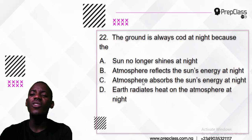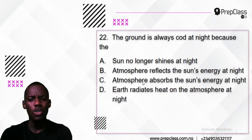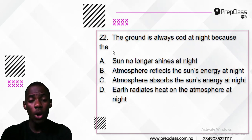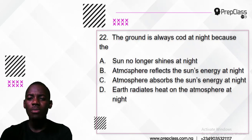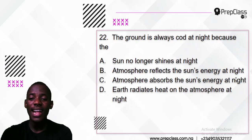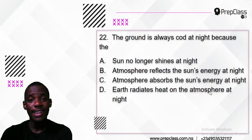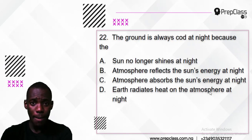Number 22. The ground is always cold at night. Why is the ground cold at night? Is it because the sun no longer shines at night? Or the atmosphere reflects the sun's energy at night? Or the atmosphere absorbs the sun's energy at night? Or the earth radiates heat onto the atmosphere at night? Do you have any idea which one might be right?